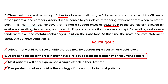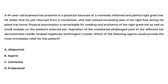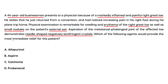Final vignette: a 44-year-old businessman presents with a markedly inflamed and painful right great toe. He just returned from a convention and noticed increased pain during his plane trip home. Physical exam shows swelling and erythema of the right great toe, as well as small nodules on the patient's external ear. Aspiration of the metatarsophalangeal joint demonstrates needle-shaped, negatively birefringent crystals. This is acute gout, so you would treat it with colchicine — choice C.